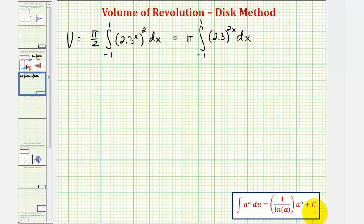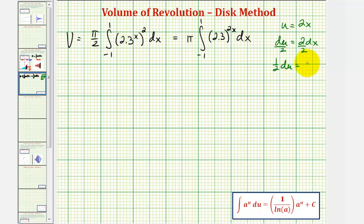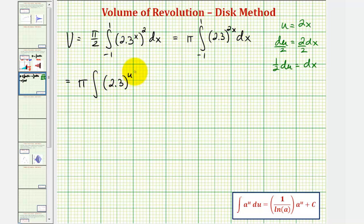Looking at the integration formula given here below, notice how we'll have to perform u-substitution to integrate this, where u would be equal to 2x and therefore du would be 2 dx. If we divide both sides by 2, we can say one-half du equals dx. So for the next step, let's write this in terms of u, leaving off the limits of integration temporarily. We'll have pi times the integral of 2.3 raised to the power of u, and since dx equals one-half du, we have an extra factor of one-half, giving us pi divided by 2 times the integral of 2.3 to the u du.